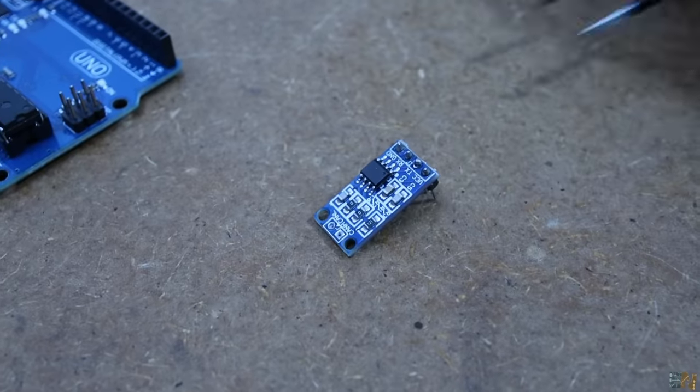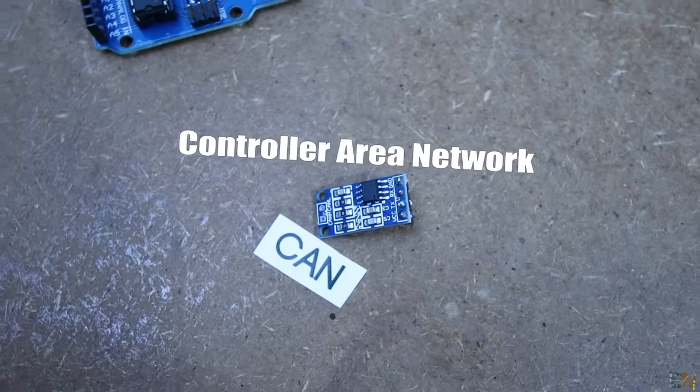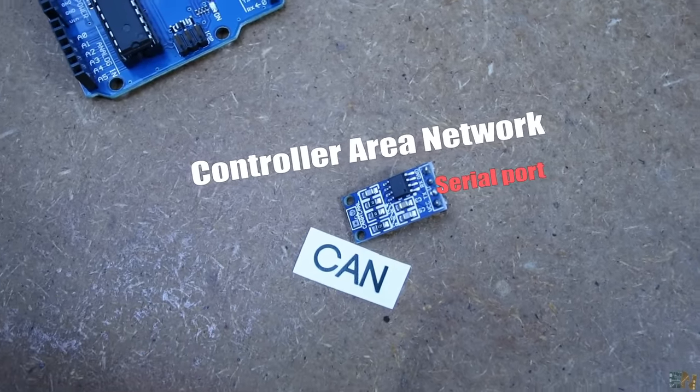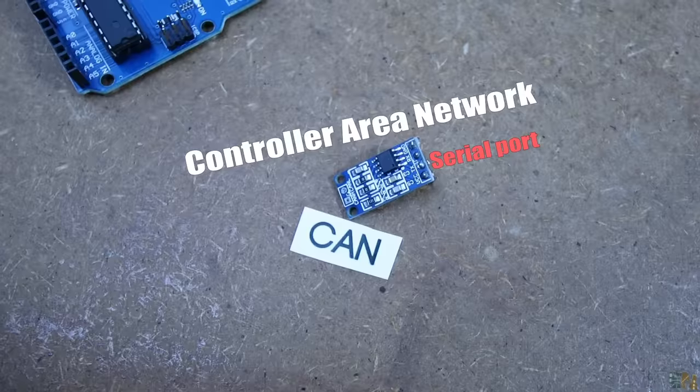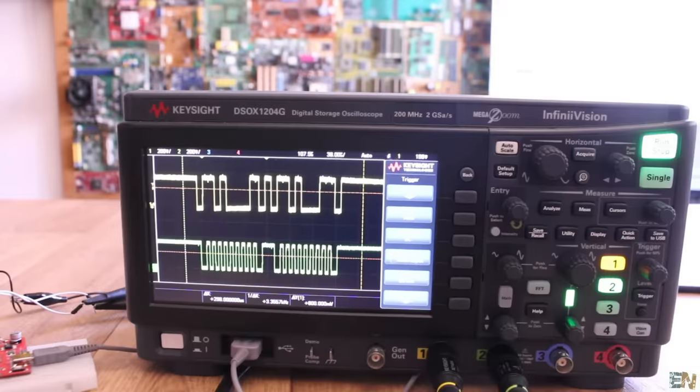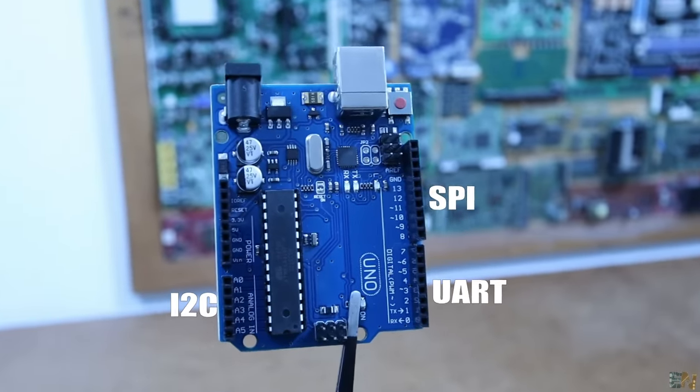This here is a CAN transceiver, where CAN stands for Controller Area Network. And it's a type of serial communication. In previous videos we talked about the UART, I2C and SPI communications. And the Arduino Uno or Nano for example, have all these types of serial ports. But it doesn't have a CAN bus.